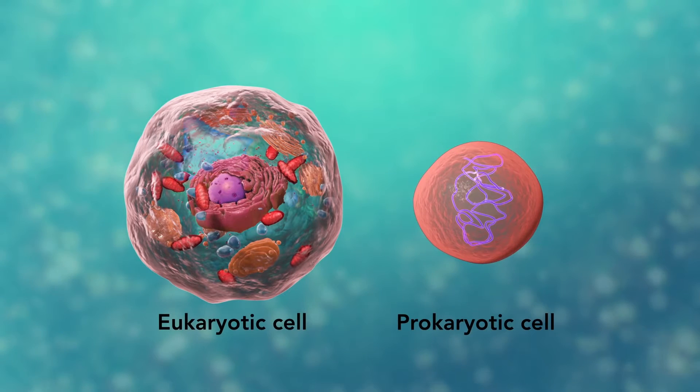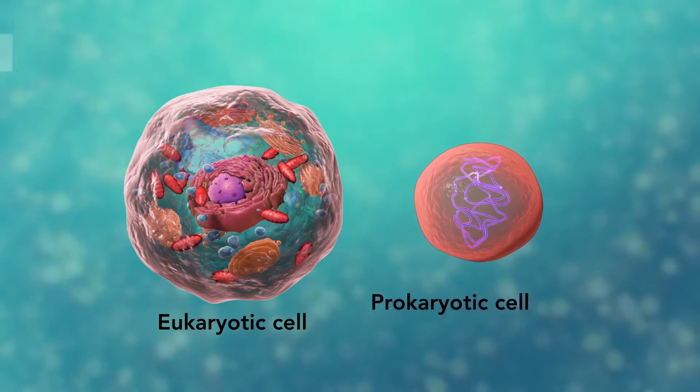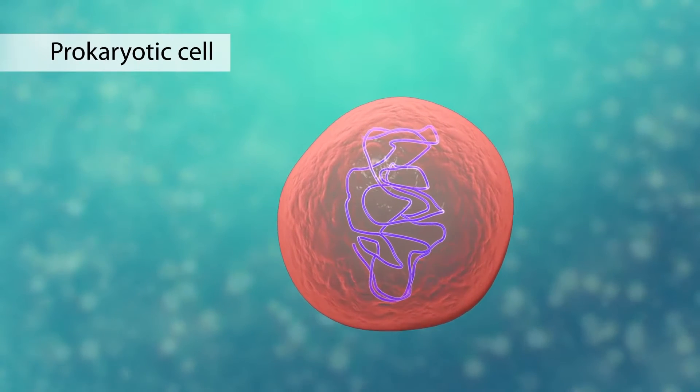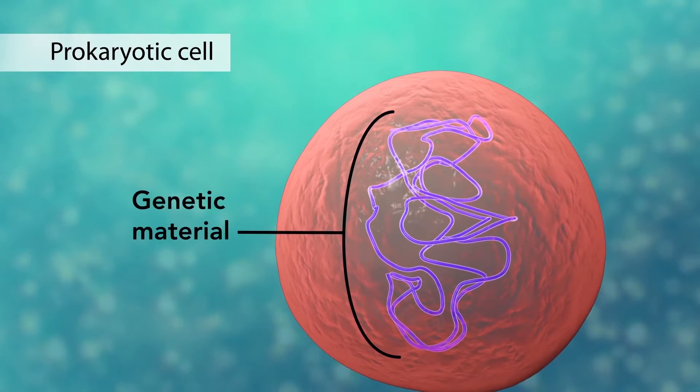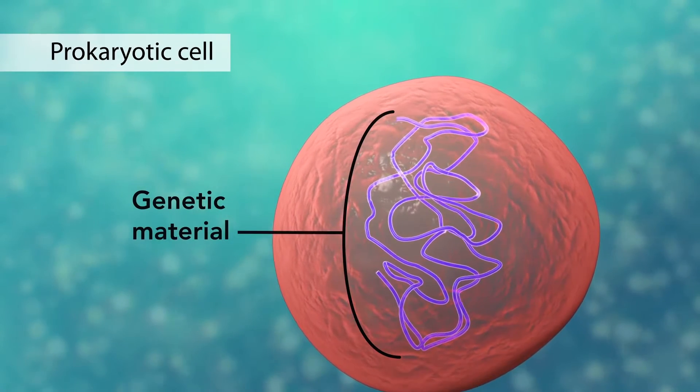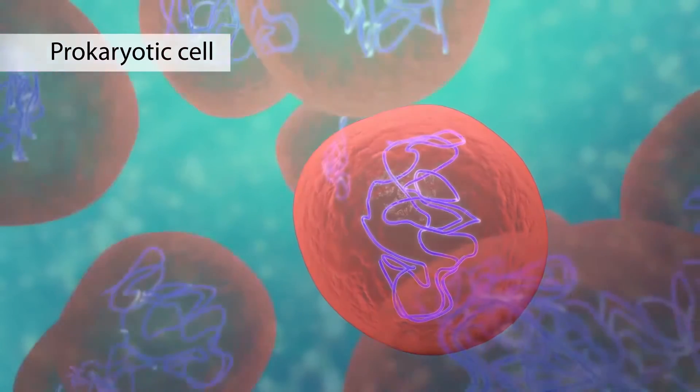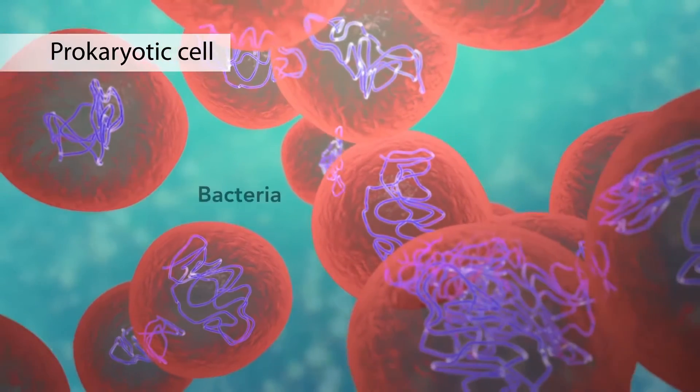The second category is prokaryotic cells. They don't have a nucleus or membrane-enclosed organelles. They do have genetic material but it's not contained within a nucleus. Prokaryotic cells are always one-celled or unicellular organisms such as bacteria.